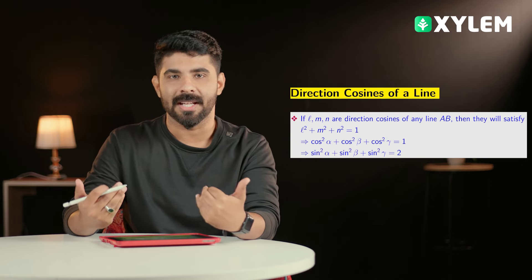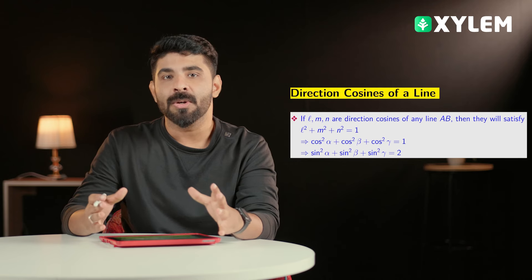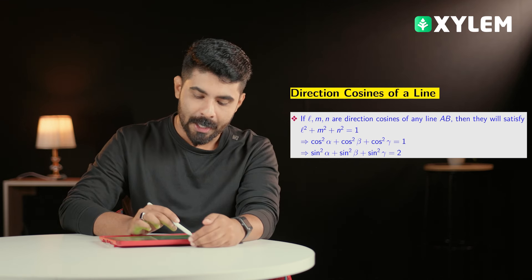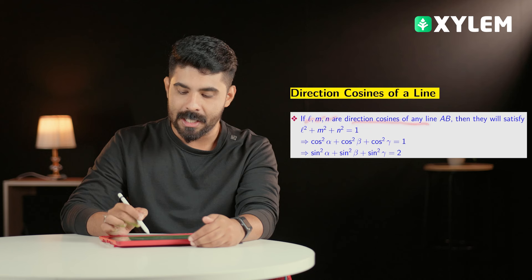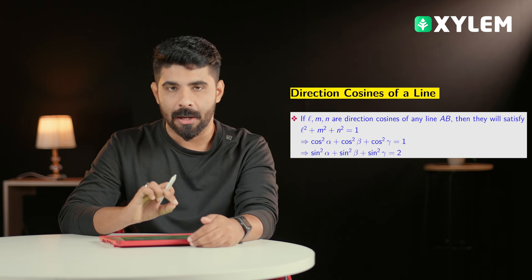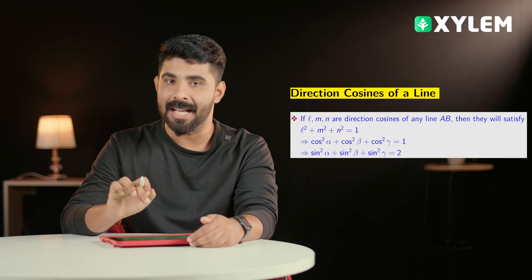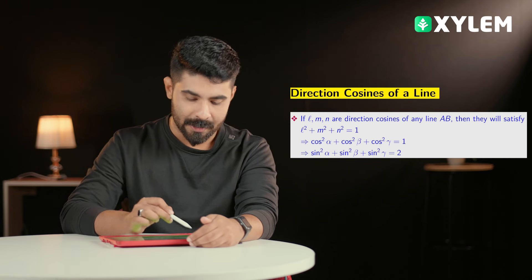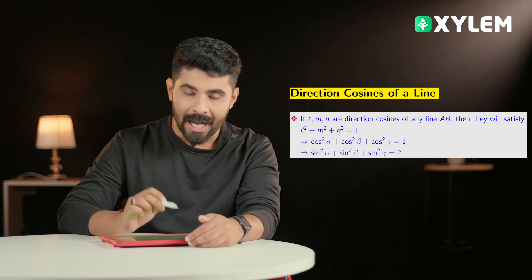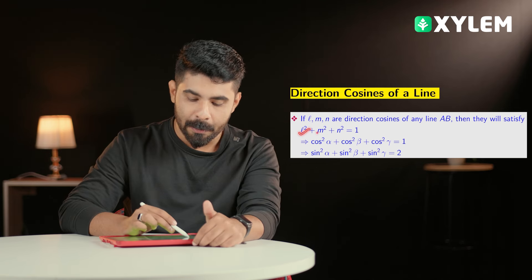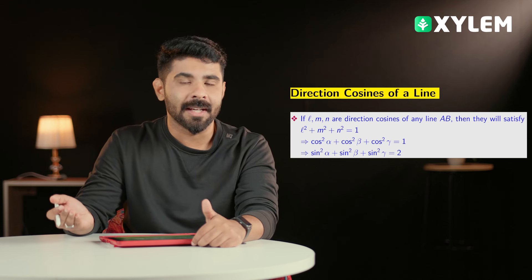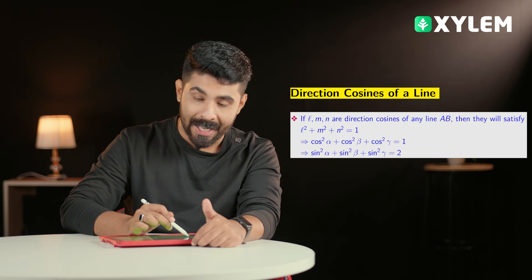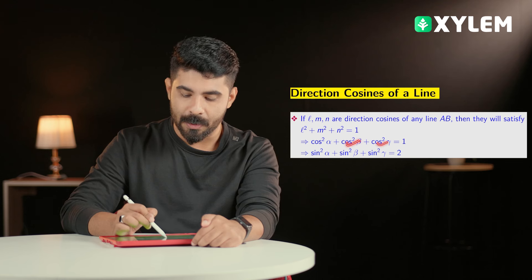Next, we cover direction cosines and direction angles, which are very important. Let L, M, N be the direction cosines of a line. We have the x-axis, y-axis, z-axis and angles alpha, beta, gamma. We can represent L, M, and N with the relation L² + M² + N² = 1, where L equals cos alpha, M equals cos beta, N equals cos gamma. So we can write cos²α + cos²β + cos²γ = 1.